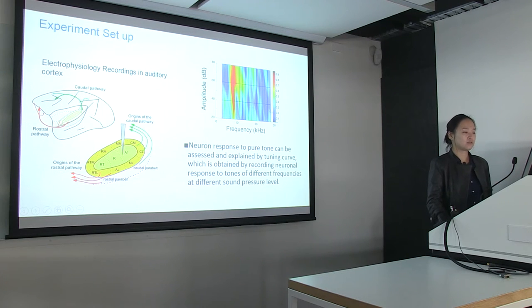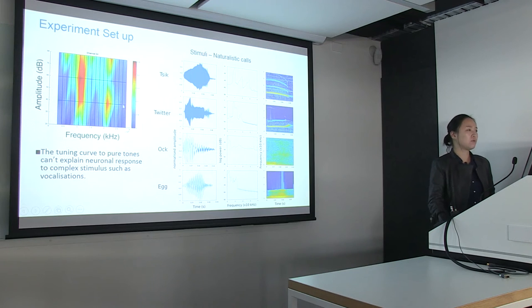This is obtained by recording neuronal response to tones of different frequencies at different sound pressure levels. However, when we have a slightly more complicated tuning curve like this, we see that this neuron responds to two ranges of different frequencies. But for this frequency range at this particular amplitude at 60 decibels, the neuron is getting surrounding inhibition. So in the natural world, when we come across natural sound like this one showing here, this is a spectrogram breaking down the sound signal into different frequency bands. This simple tuning curve can no longer explain the neuronal response to complex sounds like this.